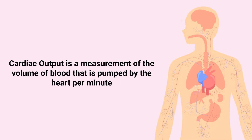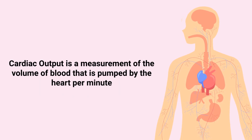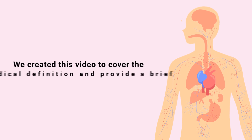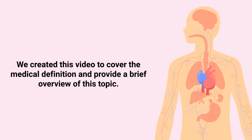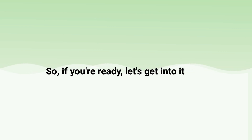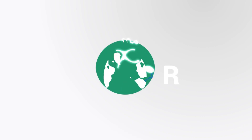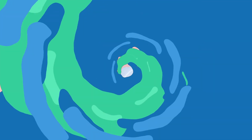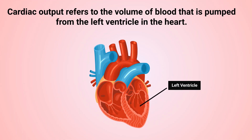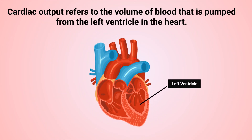Cardiac output is the measurement of the volume of blood that is pumped by the heart per minute. We created this video to cover the medical definition and provide a brief overview of this topic. As previously mentioned, cardiac output refers to the volume of blood that is pumped from the left ventricle in the heart.